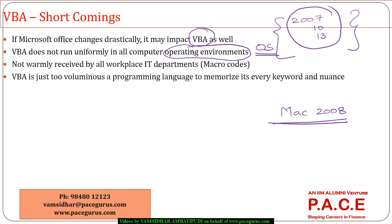Not all companies — especially the IT departments — support VBA. Generally, because there is a security issue associated with VBA, malicious malware can be introduced through it. Because of that, a lot of IT companies restrict macro-enabled workbooks in their organizations. So it is worth checking whether the organization is using VBA or not.